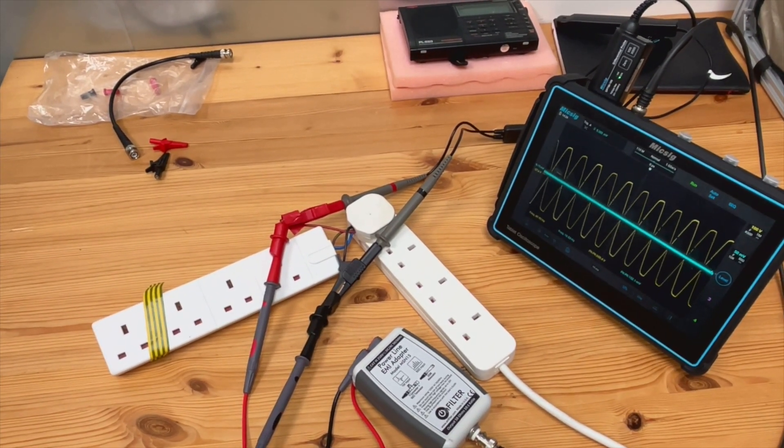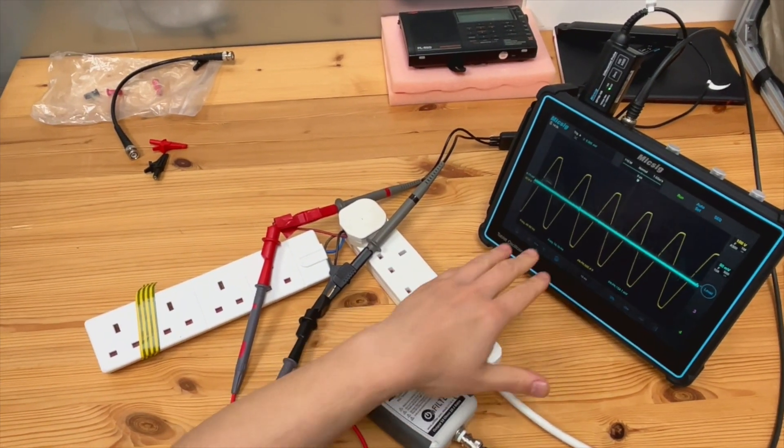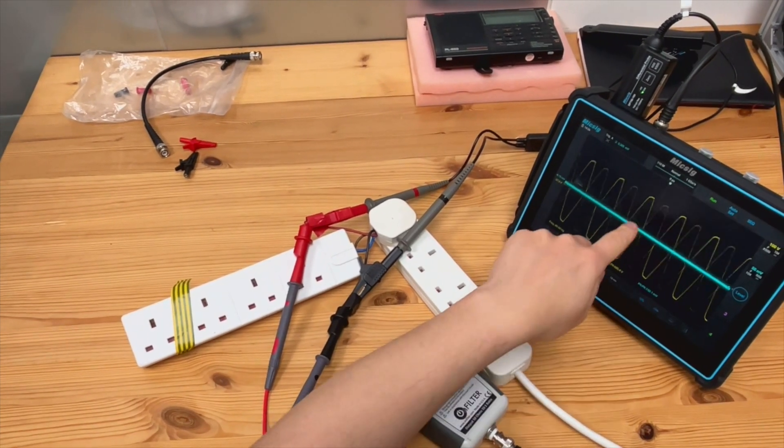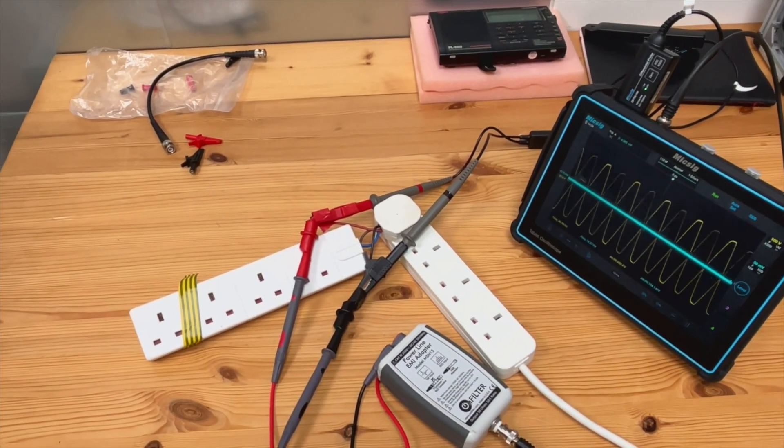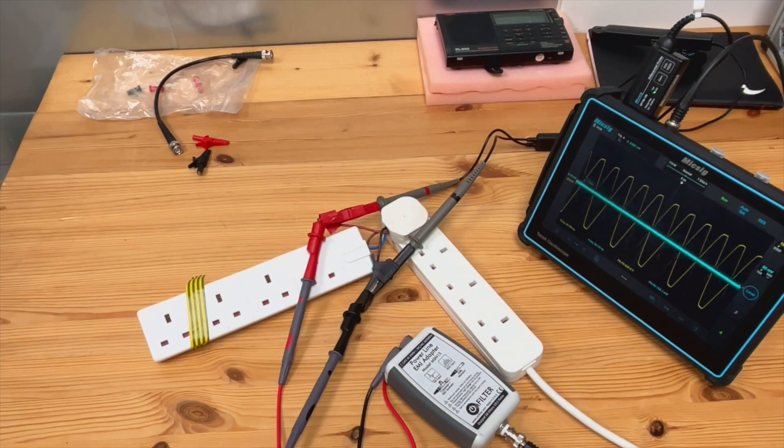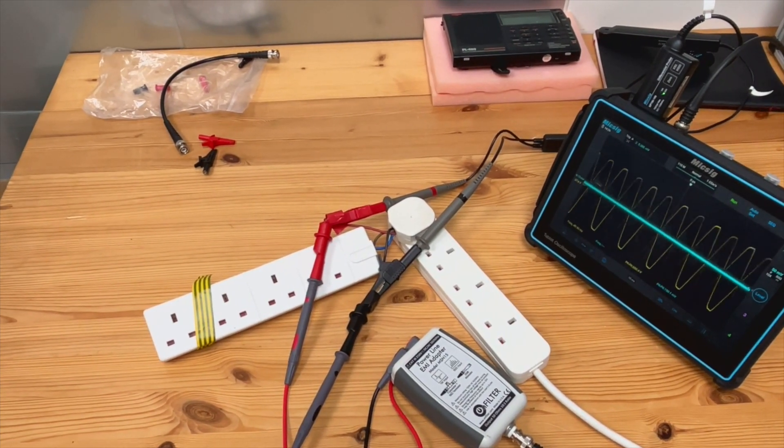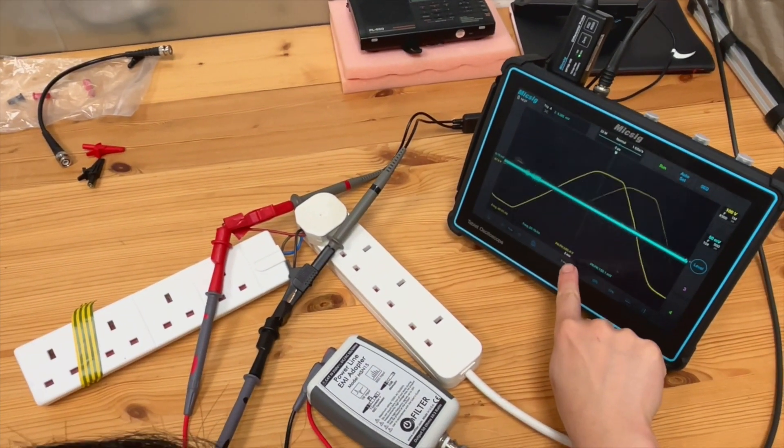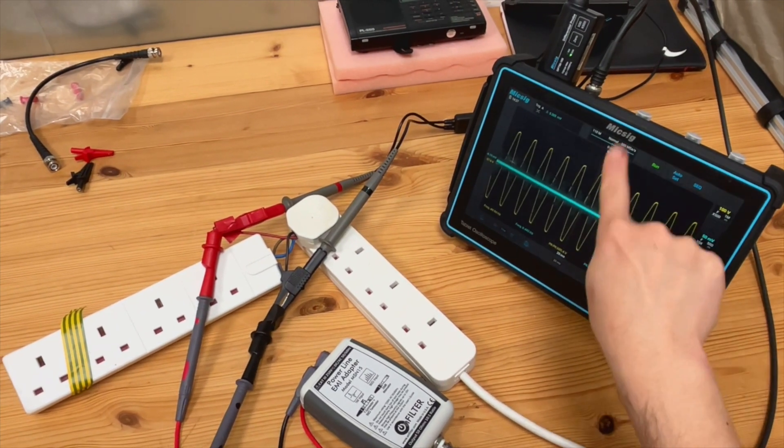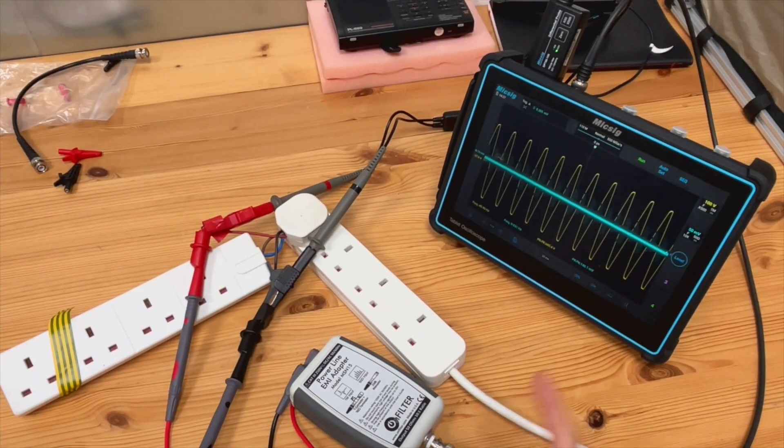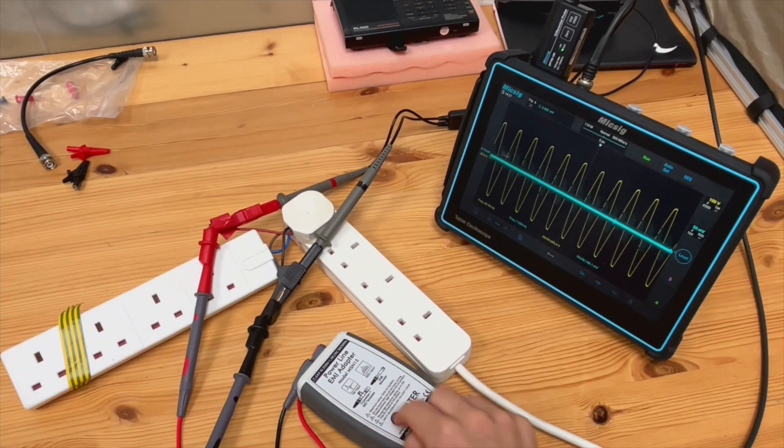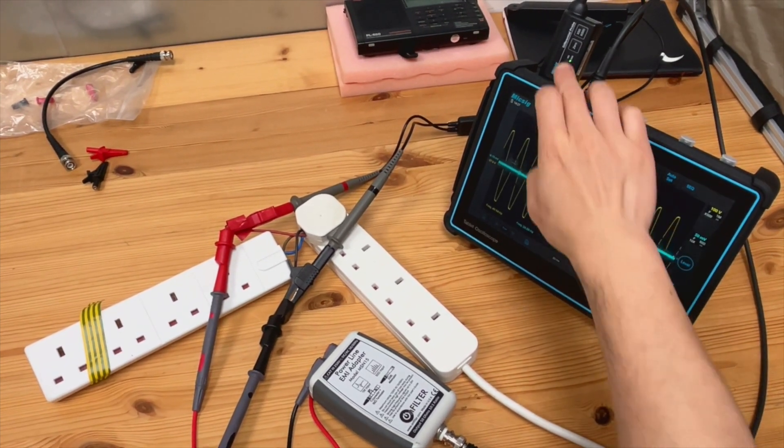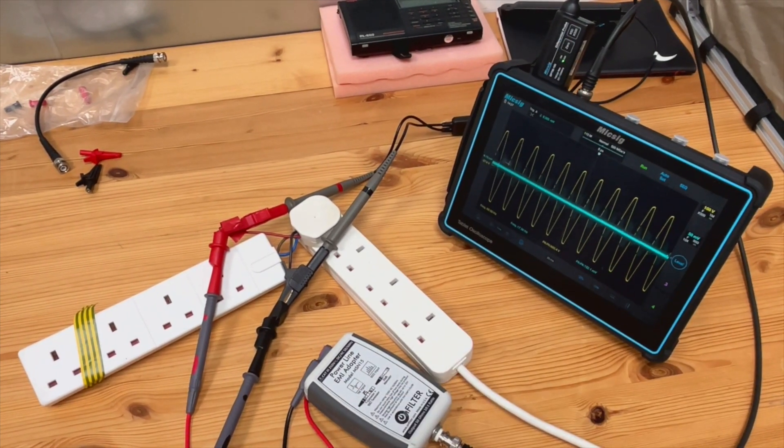Definitely by using this module, you can see the high frequency content much, much better compared with this differential probe. Even though this differential probe claims to have 100 megahertz bandwidth, you can clearly see the difference. You can see sometimes you will see a transient voltage on the lines as well. This can be captured again by this module connected to the oscilloscope, but it's going to be very difficult for the normal probe to capture that.